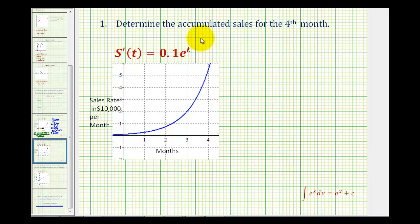This question only wants the accumulated sales for the fourth month. So we have to be careful about our limits of integration. Notice from zero to one, that would be the first month.